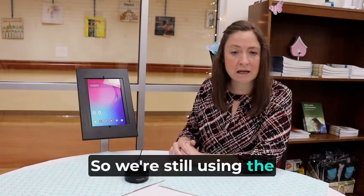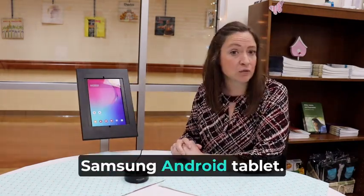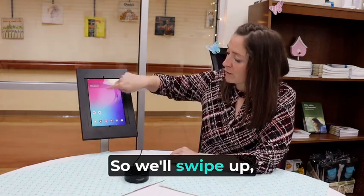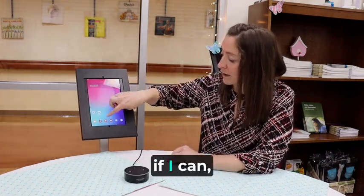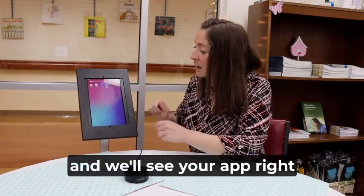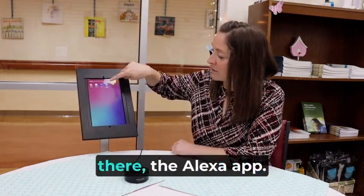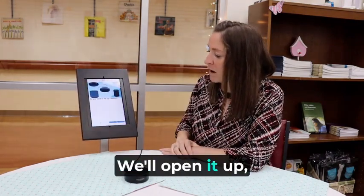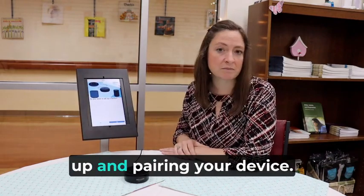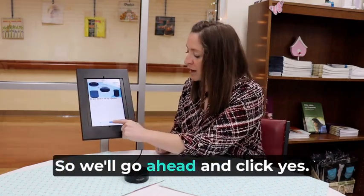So we're still using the Samsung Android tablet. So we'll swipe up. And we'll see your app right there, the Alexa app. We'll open it up. And it'll come up to setting up and pairing your device. So we'll go ahead and click Yes.